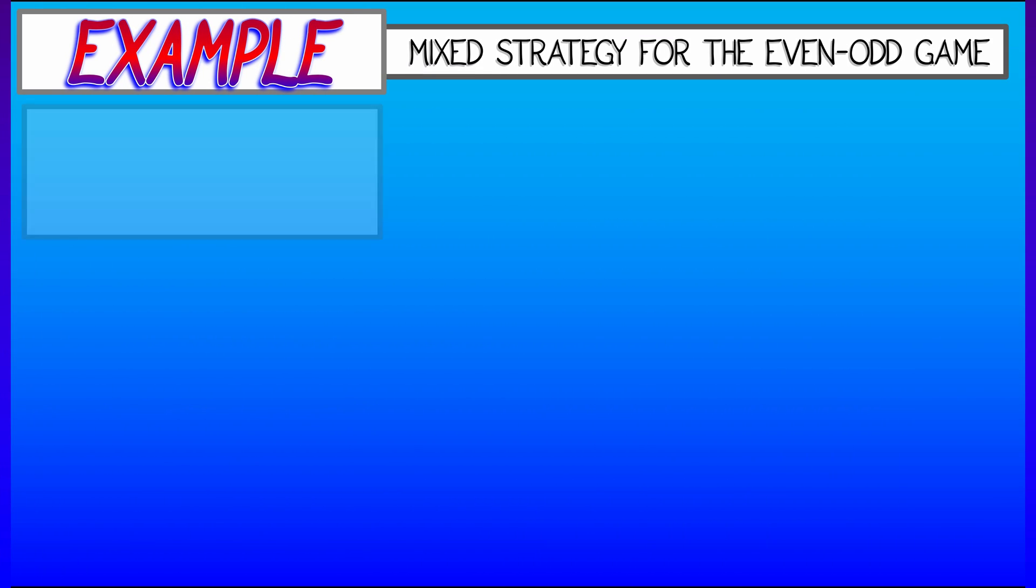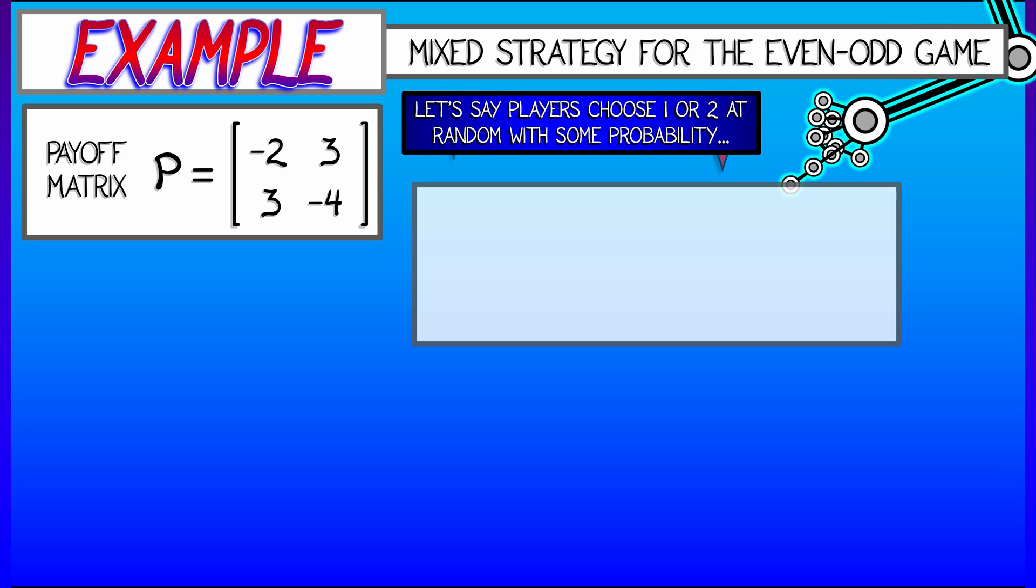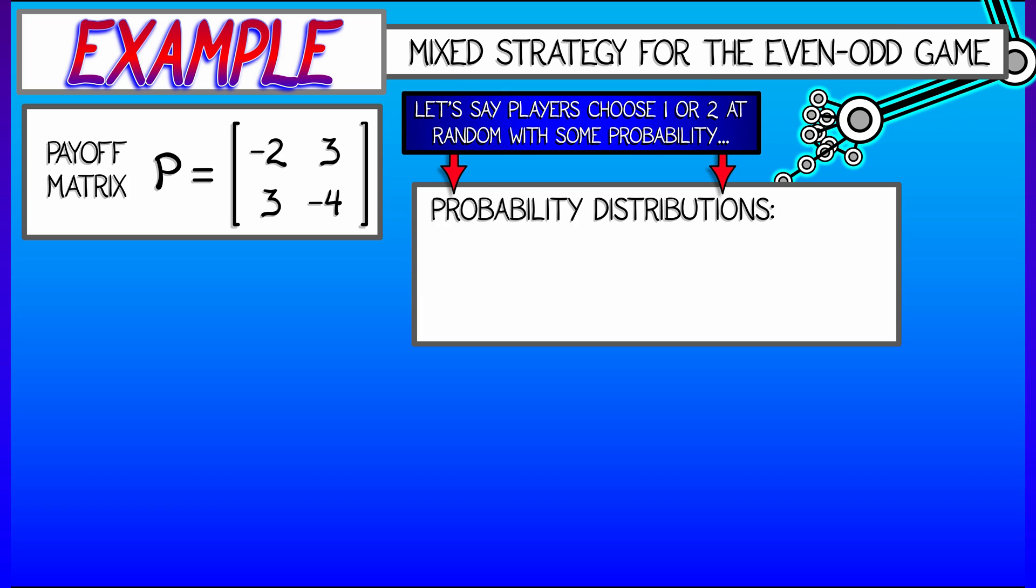Let's go back to the even-odd game that we looked at before, where the payout matrix is shown. Each player has two strategies. Let's say that players choose either 1 or 2 at random with some probability vectors. Player A has a probability vector that consists of A and 1 minus A, where A is a number between 0 and 1. You've got to have that so it adds up to 100%.